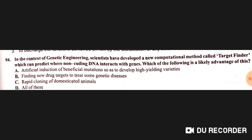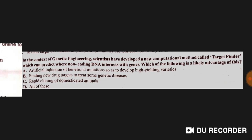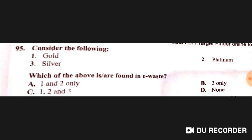In the context of genetic engineering, scientists developed a computational method called Target Finder, which can predict where non-coding DNA interacts with genes. Likely advantages include: artificial induction of beneficial mutations to develop high-yielding varieties, finding new drug targets to treat genetic diseases, and rapid cloning of domesticated animals — answer D: all of the above.